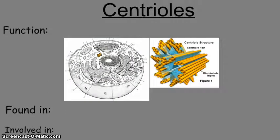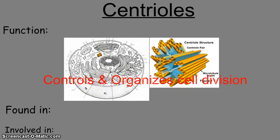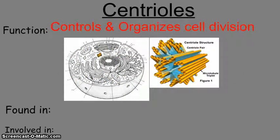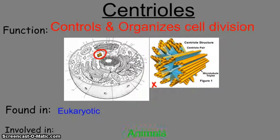Centrioles are the control and organizing centers of cell division. They appear as a cluster of tubules used for moving chromosomes and organizing cell division. They are found in eukaryotic cells only, specifically in animals, and are involved in cell reproduction. Those are the main organelles we will learn about this year and their standard functions.